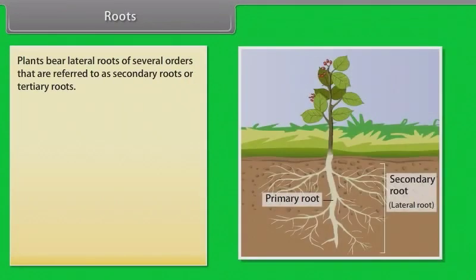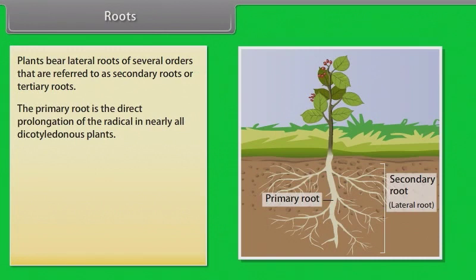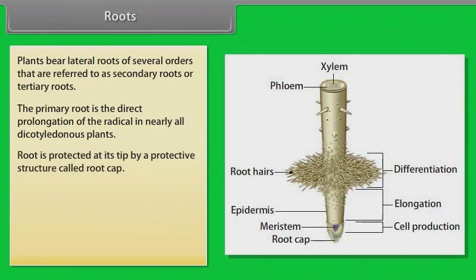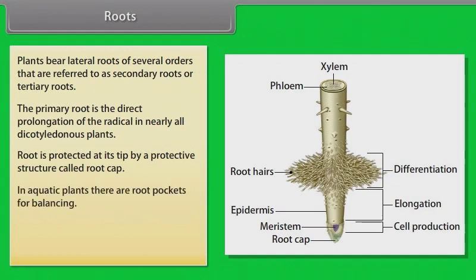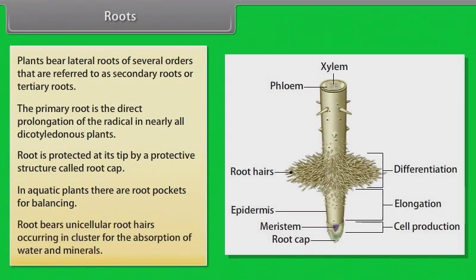Plants bear lateral roots of several orders that are referred to as secondary roots or tertiary roots. The primary root is the direct prolongation of the radicle in nearly all dicotyledonous plants. Root is protected at its tip by a protective structure called root cap. In aquatic plants, there are root pockets for balancing. Root bears unicellular root hairs occurring in clusters for the absorption of water and minerals.